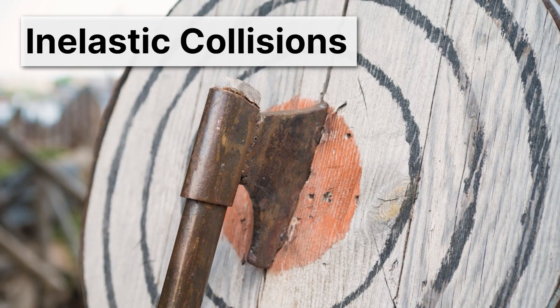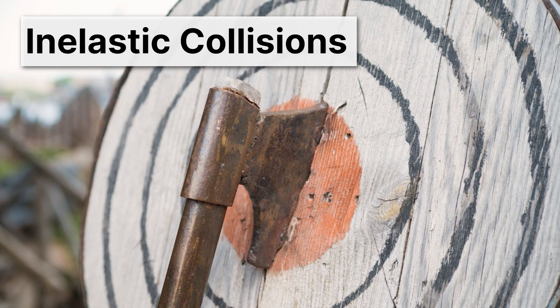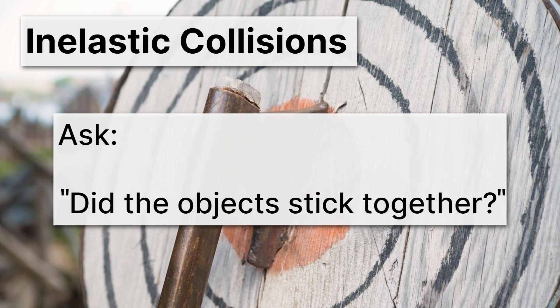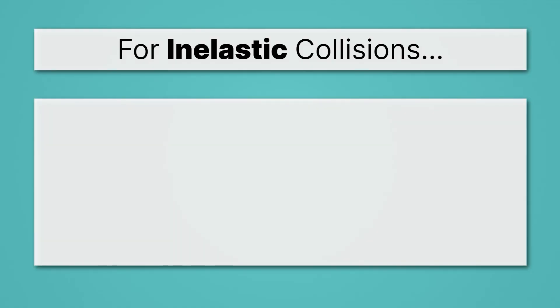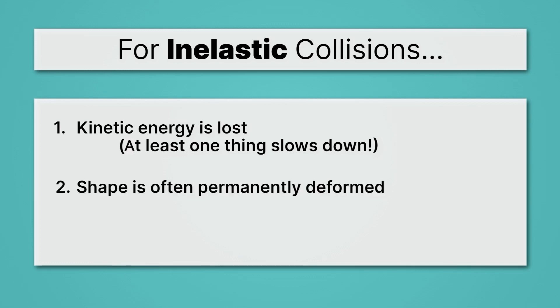Okay first up, what are inelastic collisions? Remember they're collisions where things stick together. So we always want to ask did the object stick together? If the answer is yes it's an inelastic collision. For inelastic collisions recall that kinetic energy is lost. That means at least one thing slows down. Secondly remember that shape is often permanently deformed. So you'll see cars crumpled for example. And thirdly, and this is the most important one for this video, the final velocity of both objects is the same. And that's actually going to make our life a lot easier.